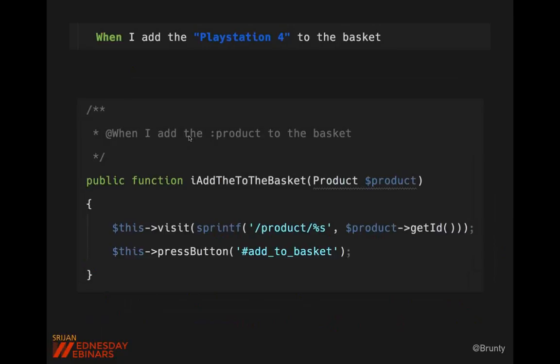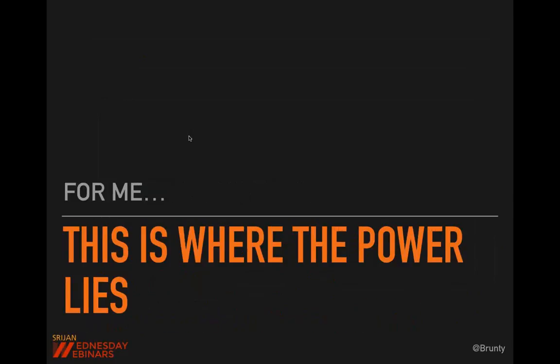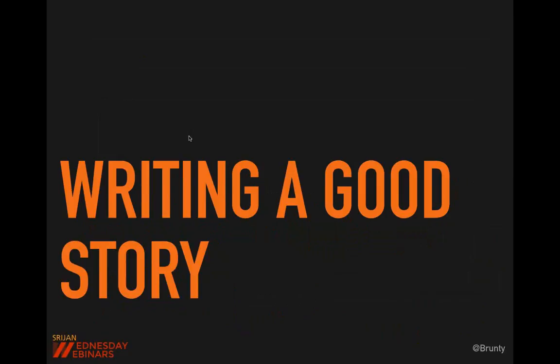The implementation changes a lot more frequently than the business rules. So this helps us formulate how to write a good story versus a bad story. A lot of this is avoided by having conversations before you write code, but it can be easy to slip into bad habits. A bad story might say: 'given I'm on the product page, when I press add to basket, then I should see PlayStation 4 and I should see £250.' This would work and we could implement it, but it's not a good story.